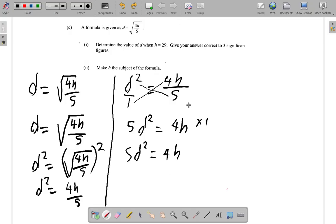You end up with 5d squared equals 4h, as before. Remember what we did before is multiply by 5, the 5s cancel, and you have 4h, then this by 5 gives 5d squared. So it works with cross multiply or with multiplying both sides by 5.